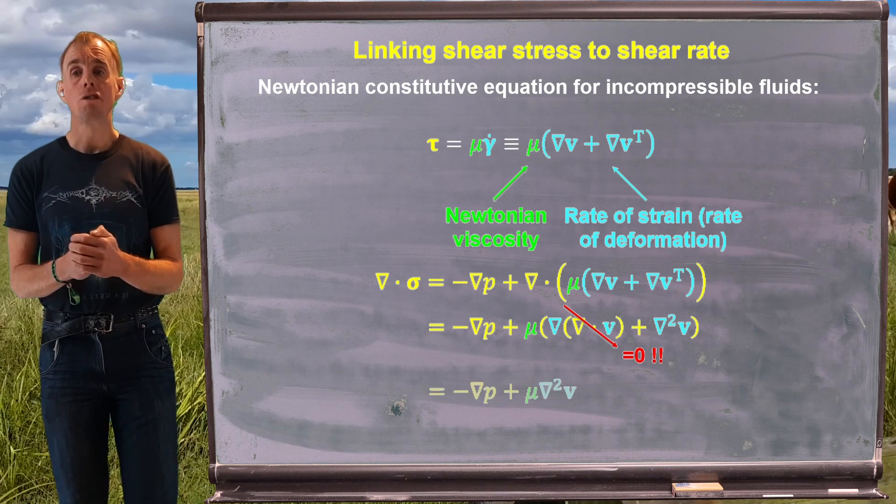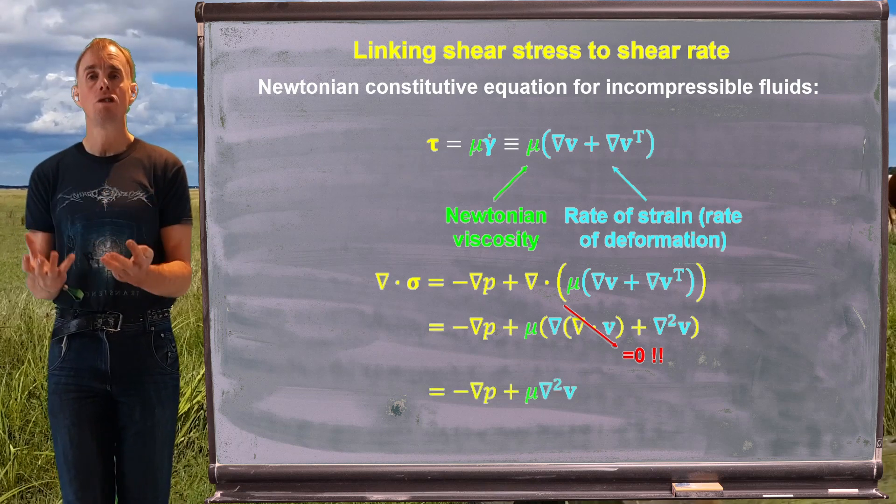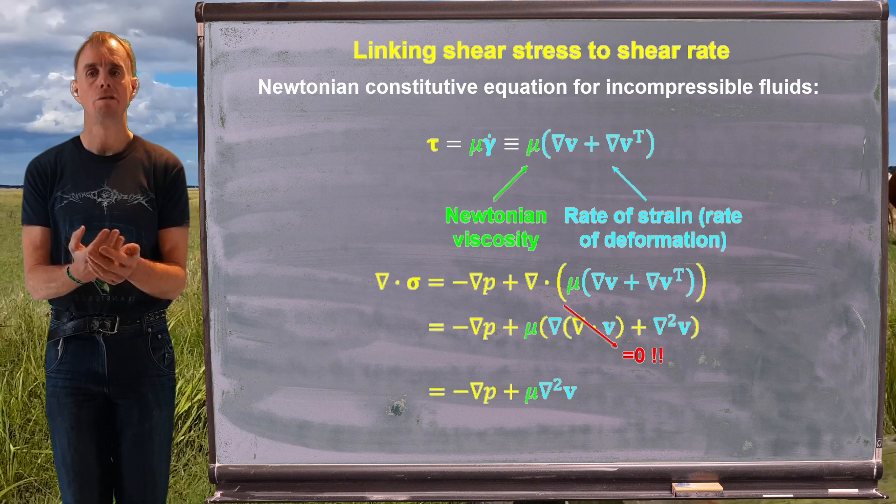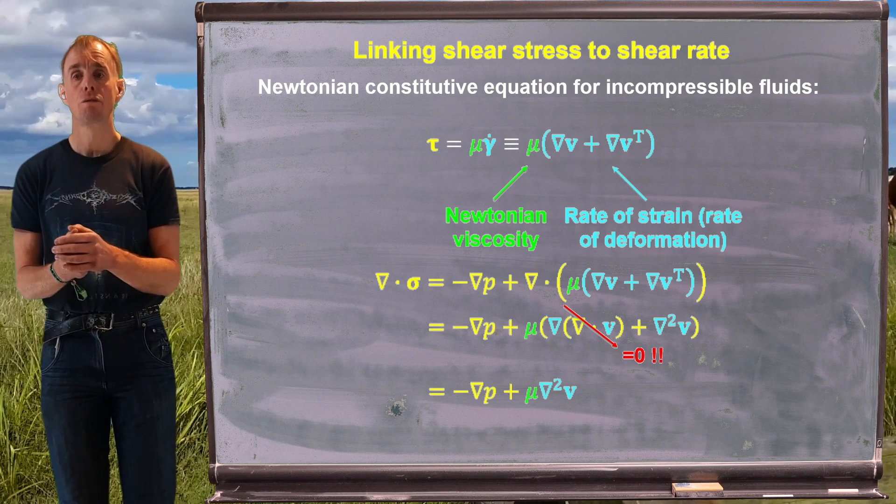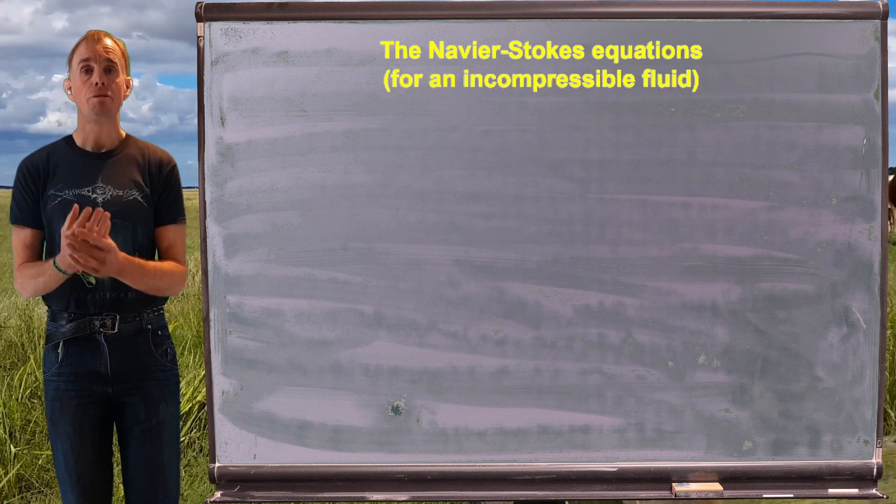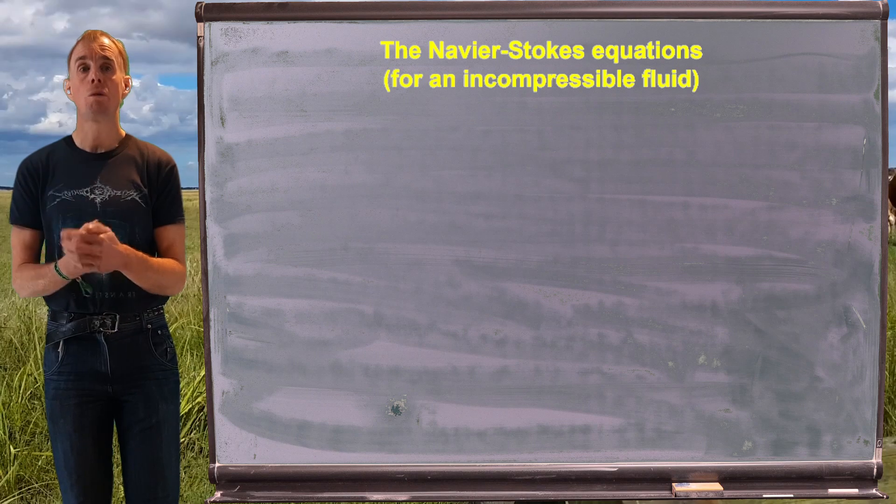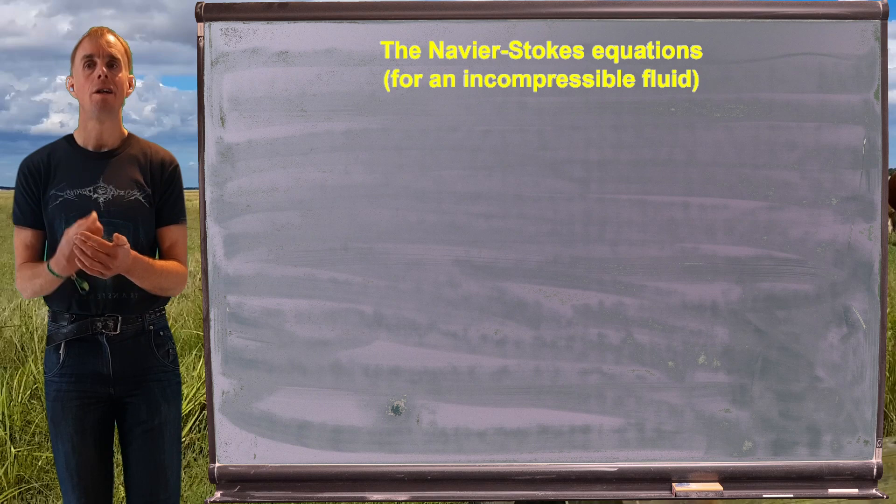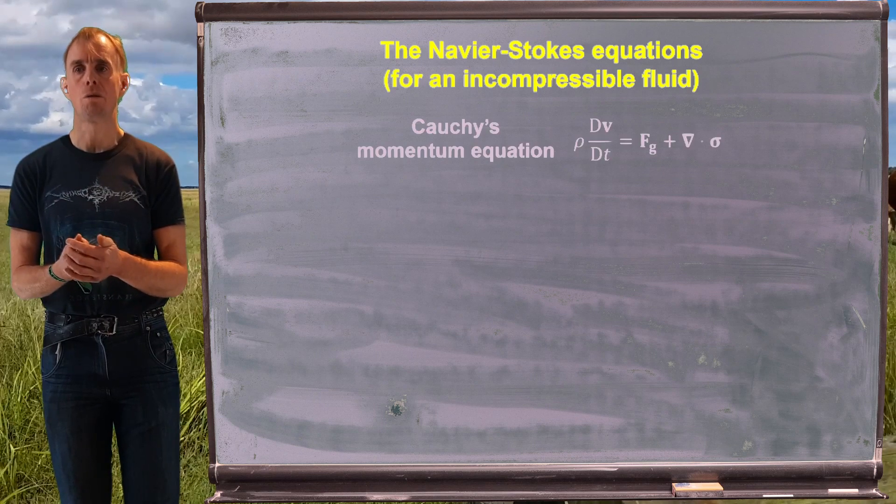So we can simply write that the divergence of my stress tensor sigma is minus grad p plus mu del squared v, which is really nice and compact. And we can use this now, finally, to get from Cauchy's equation of momentum to the equations of momentum for an incompressible Newtonian fluid, the incompressible Navier-Stokes equations.